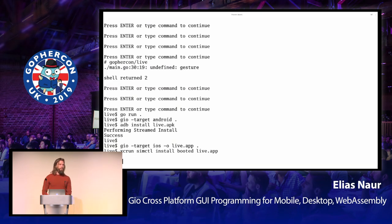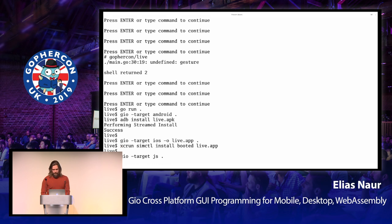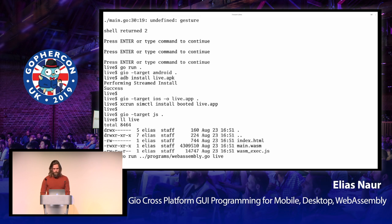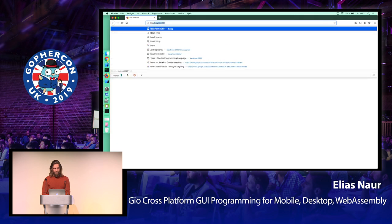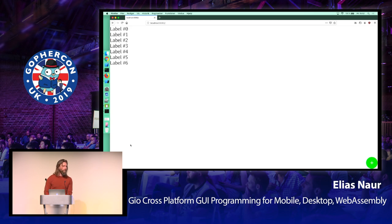Finally, the GU tool supports building for the browser — it builds a WebAssembly module and adds the required support files to serve and run that module in your browser. Target JS, and it outputs a directory with the WebAssembly module, HTML file, and JavaScript file. With a simple web server serving that directory, you connect to localhost 8080 and have your program running in the browser. It's the same code built for four or five platforms. The button works as expected, and if you had enough rows you could scroll inside the browser.